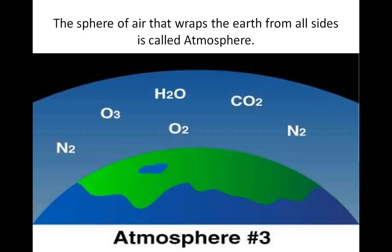It contains approximately 78% of nitrogen, 21% of oxygen and 1% of other gases. When we go higher from the surface of the earth, the amount of most of the gases in the atmosphere decreases. As we move higher and higher, the amount of these gases decreases.